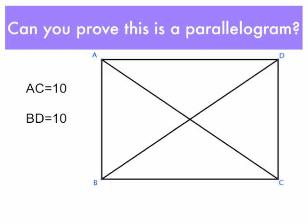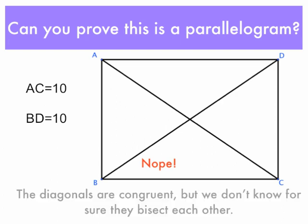How about this figure? We see AC is 10 and BD is 10. AC is a diagonal, BD is a diagonal. They're both equal in length, but that does not imply that this is a parallelogram. We know that they're congruent, but we're not sure that the diagonals bisect each other. And so we can't prove that this is a parallelogram.